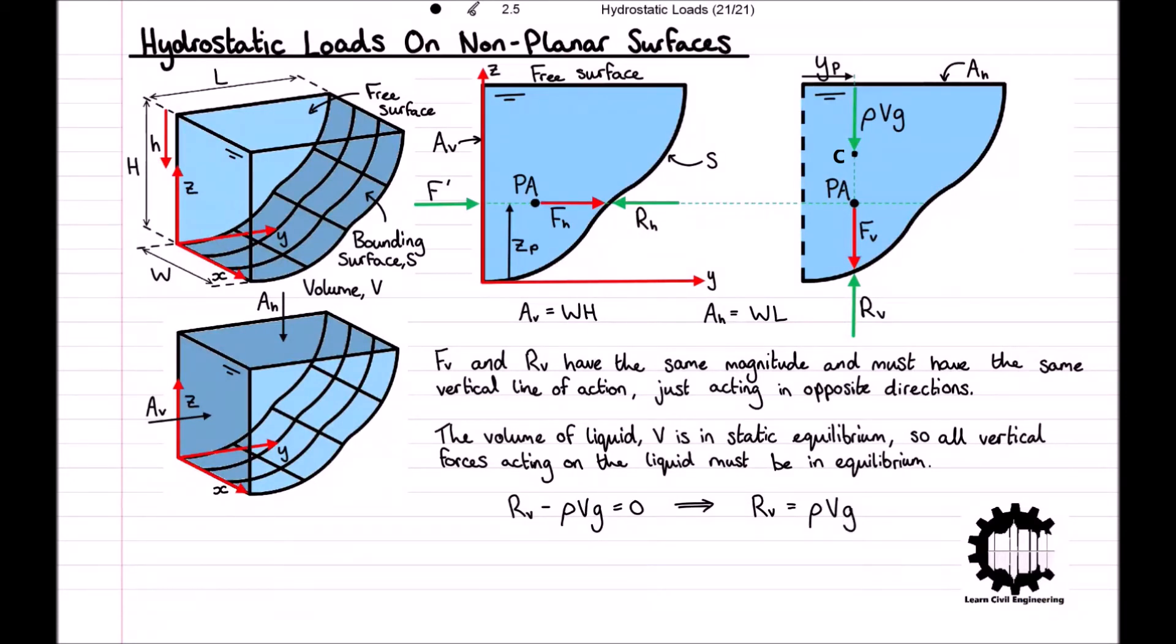As we can see, RV and rho VG must have the same vertical line of action, and therefore FV equals rho VG with FV and rho VG acting in the same line. The liquid's weight rho VG acts through its centre of mass which is denoted with a C and which is located at a distance of YP from the Z axis as we can see in the diagram.